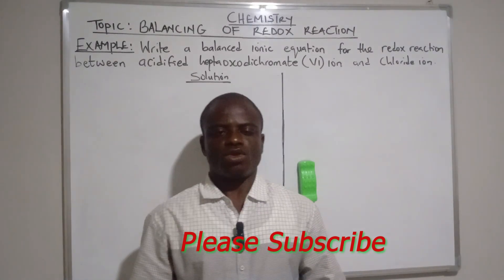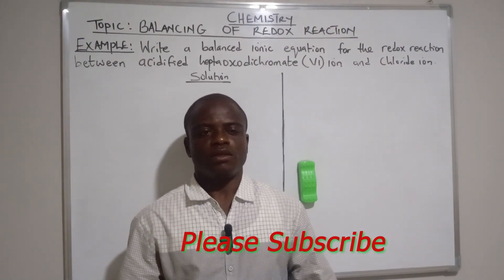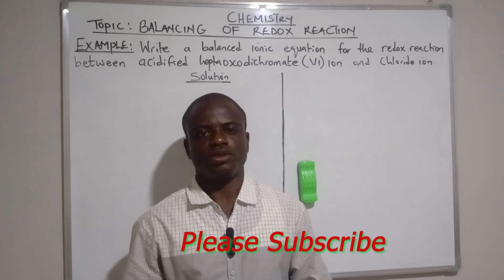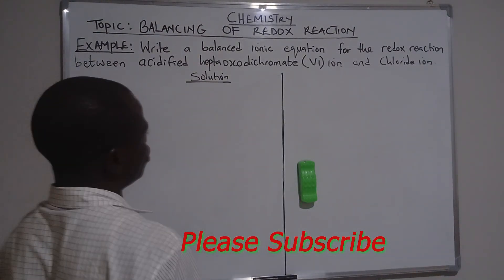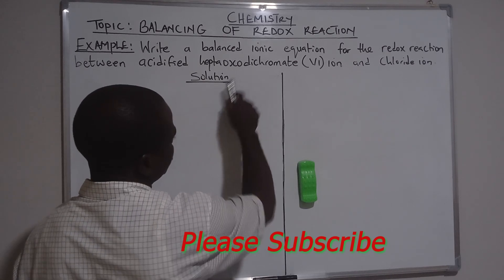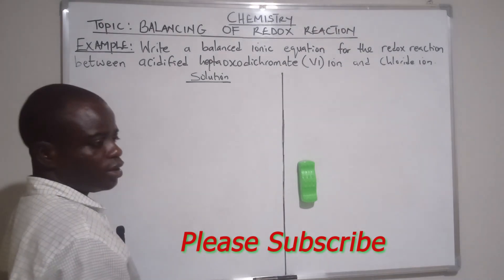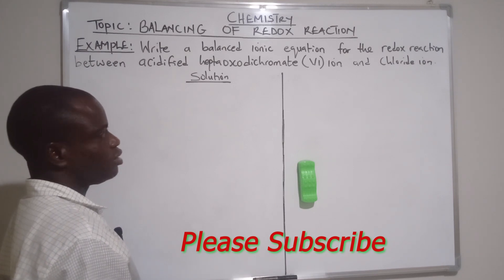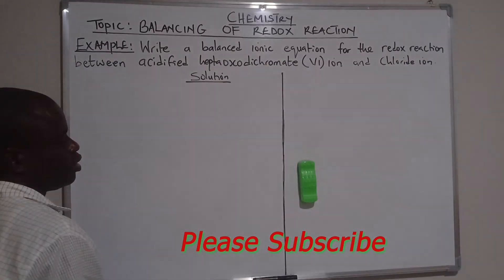Good day students. Today we want to solve a problem on the balancing of a redox reaction. What we need to know is that acidified potassium dichromate, the Cr₂O₇²⁻ ion, is an oxidizing agent that is being reduced to a chromate ion.